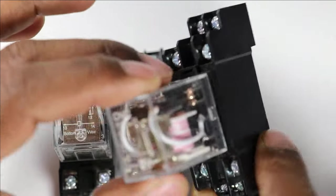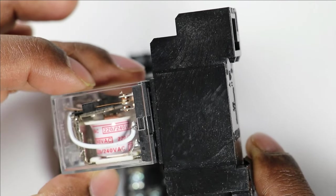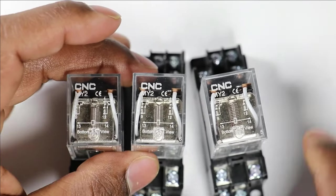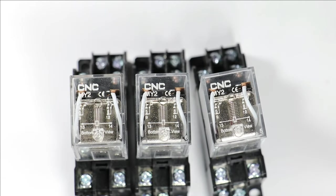On this last relay you can see 220V slash 240V AC is written. That means this works on AC power supply. You observed that the model number for all is same, but voltage required to operate these relays will be different for each.